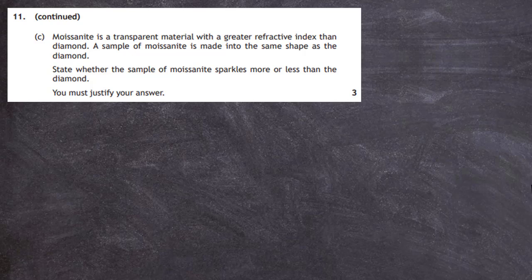Part c: Moissanite is a transparent material with a greater refractive index than diamond. A sample of moissanite is made into the same shape as the diamond. We must state whether moissanite sparkles more or less than diamond and justify our answer. The sparkle in any material is due to the greater possibility of rays totally internally reflecting inside the material.